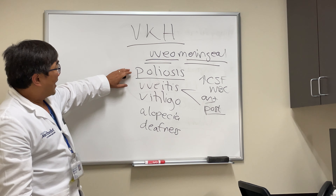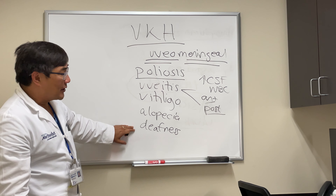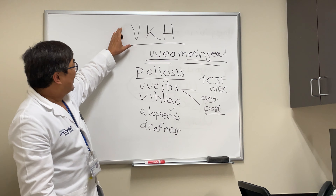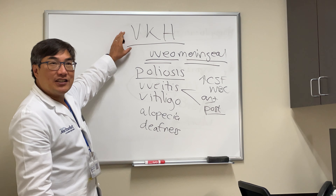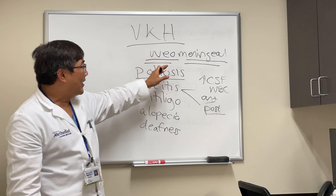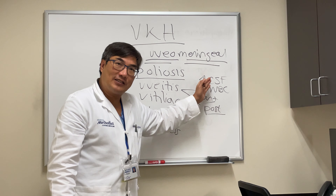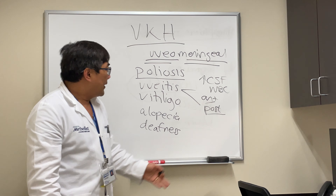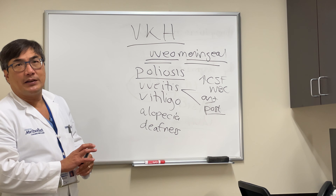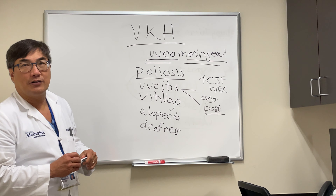A useful mnemonic is PUVAD: Poliosis, Uveitis, Vitiligo, Alopecia, Deafness. So VKH is a uveomeningeal syndrome targeting the pigmented cells in the uvea, producing CSF pleocytosis and meningitis. You want to assess both the anterior and posterior segment. The key differentiating feature is multifocal serous retinal detachments.